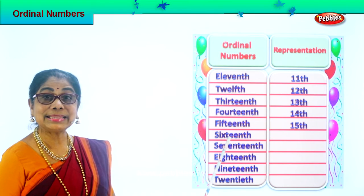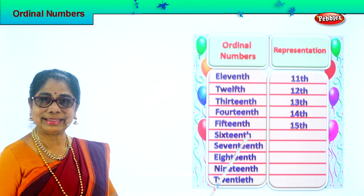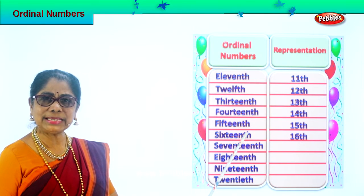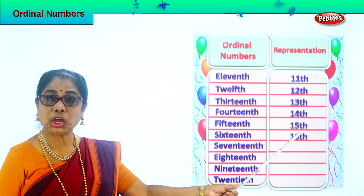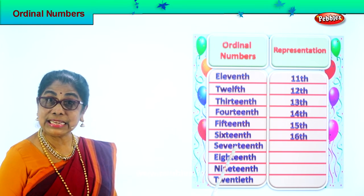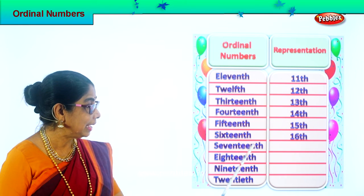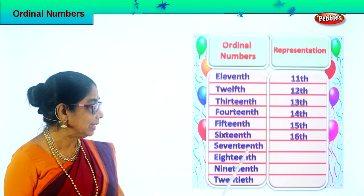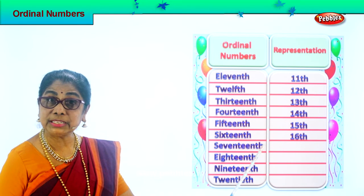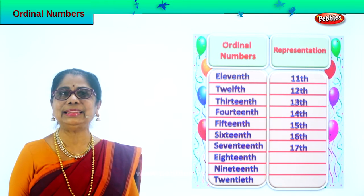Now look at sixteenth. Spell sixteenth: S-I-X-T-E-E-N-T-H. How do you represent sixteenth? Put number 16 and write TH at the side: 16th. Read this: sixteenth. Next, seventeenth. Spell seventeenth: S-E-V-E-N-T-E-E-N-T-H. How do you represent seventeenth? Put number 17 and write TH at the side: 17th. Read this: seventeenth.